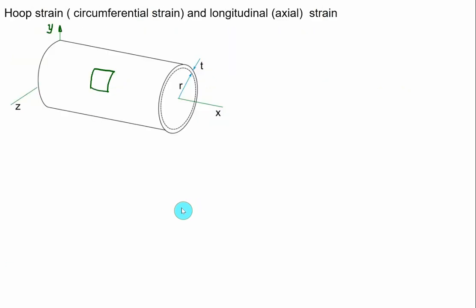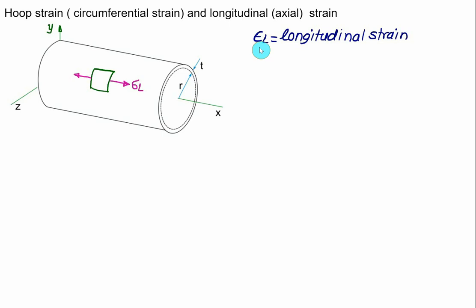Now we introduce the circumferential stress and axial stress for a thin cylinder having internal radius R and wall thickness T. The stress defined along the axis is called the longitudinal stress, represented by sigma-L. The longitudinal strain epsilon-L is defined as the longitudinal stress divided by Young's modulus E. Longitudinal stress is given as pressure times diameter divided by four times wall thickness, divided by Young's modulus E.